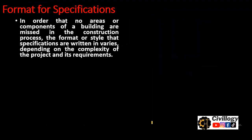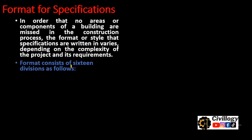Format of specification: these specifications are usually given at the start of the set of drawings, so that no areas or components of the building are missed in the construction process. The format or style in which specifications are written varies depending on the complexity of the project and its requirements. The format consists of 16 divisions. Specifications give specific details about a specific job.